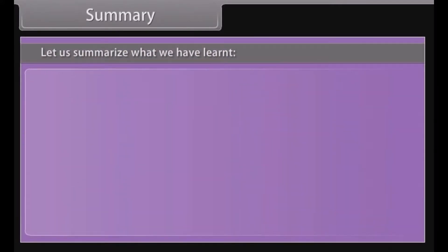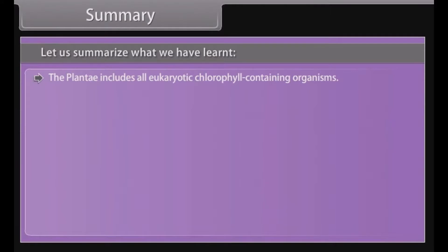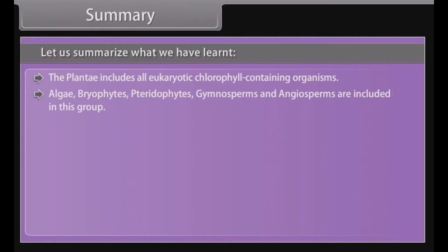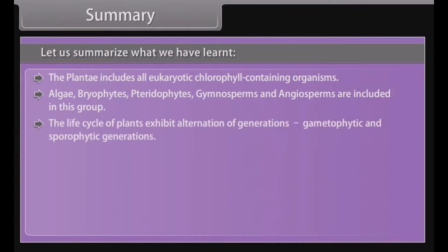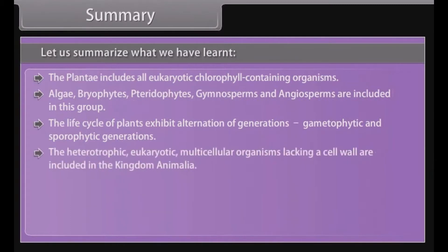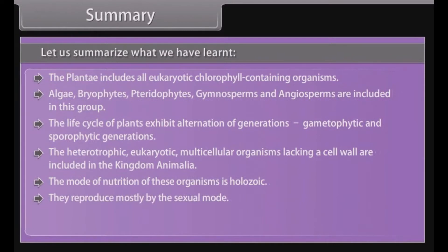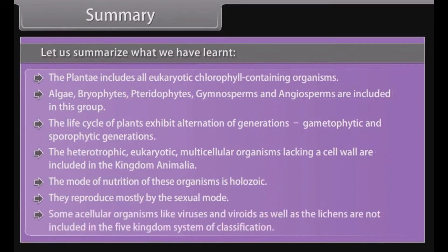Summary: Plantae includes all eukaryotic chlorophyll-containing organisms — algae, bryophytes, pteridophytes, gymnosperms and angiosperms. The life cycle of plants exhibits alternation of generations between gametophytic and sporophytic generations. Heterotrophic, eukaryotic, multicellular organisms lacking a cell wall are included in kingdom Animalia; their mode of nutrition is holozoic and they reproduce mostly by the sexual mode. Some acellular organisms like viruses and viroids, as well as lichens, are not included in the five kingdom system of classification.